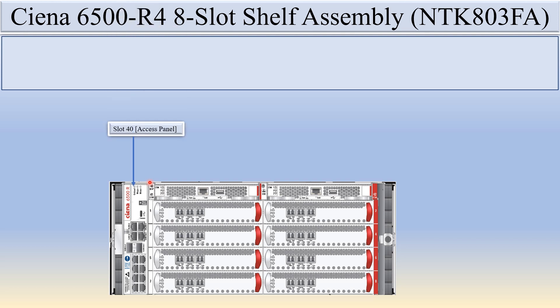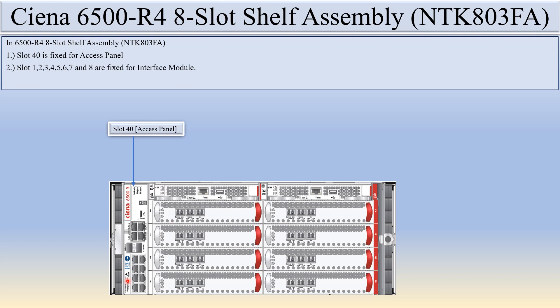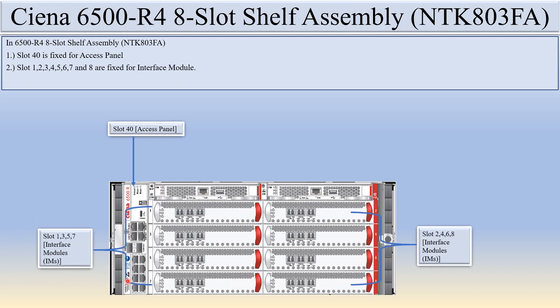In this Ciena 6500 R4 eight-slot shelf assembly, slot 46 is fixed for the access panel, as you can see. Slot 40 is also fixed for the access panel. There are eight slots — one, two, three, four, five, six, seven, eight — and these eight slots are fixed for the interface module.